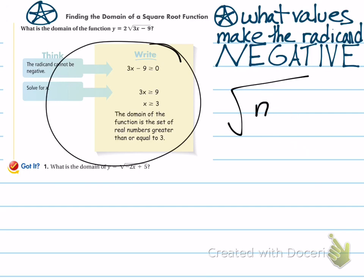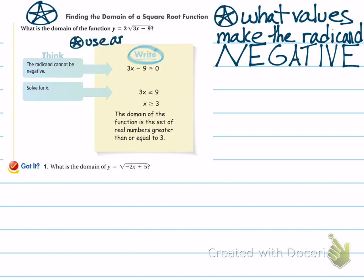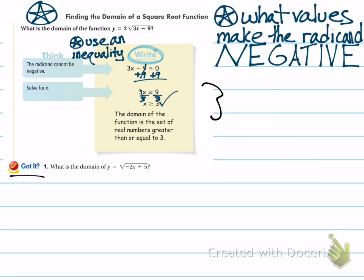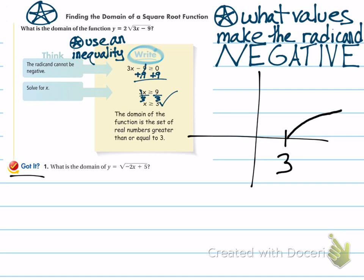In an example like this where you can see 3x minus 9, you set it as greater than or equal to 0 using an inequality. After you add 9 to both sides, and then divide both sides by 3, you are left with x is greater than or equal to 3. That means you can plug in 3 for x and your function will still work. If you plug in 3: 3 times 3 is 9, and 9 minus 9 is 0. You can take the square root of 0 — that's allowed. So the first x value you could plug in is 3, and the function starts there and moves up.